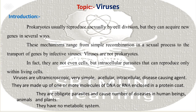Subpoint: Introduction. Prokaryotes usually reproduce asexually by cell division, but they can acquire new genes in several ways. These mechanisms range from simple recombination in a sexual process to the transfer of genes by infective virus. Viruses are not prokaryotic. In fact, they are not even cells, but intracellular parasites that can reproduce only within living cells. Viruses are ultra-microscopic, very simple, acellular, intracellular disease-causing agents.